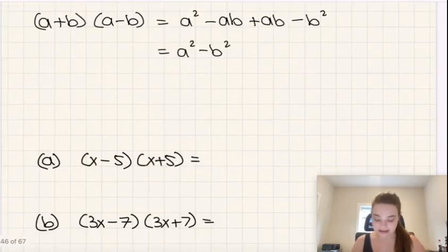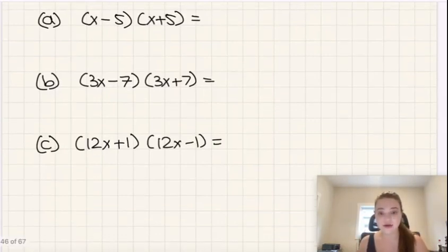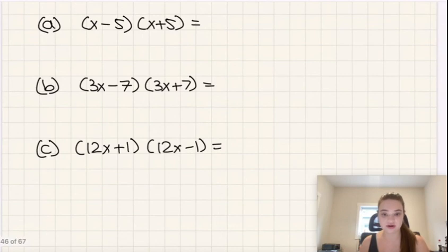So let's do a few more examples like this. If we have (x-5)(x+5), we could do first, outer, inner, and last. But here we would end up with +5x for outer and -5x for inner, so those would cancel each other out. Therefore, there's no point even writing them. We could just write x² - 25, and that's our answer.